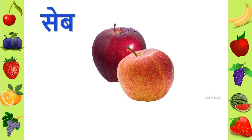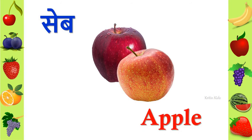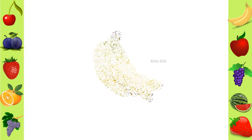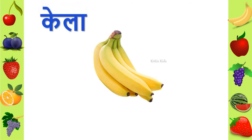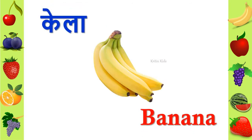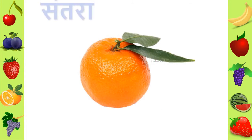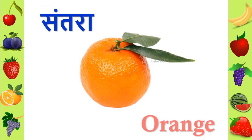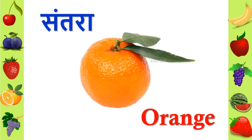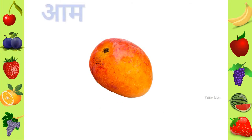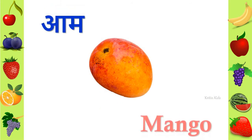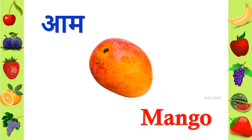We call it seb in Hindi and in English we call it apple. We call it kela in Hindi and in English we call it banana. We call it santra in Hindi and in English we call it orange. We call it aam in Hindi and in English we call it mango.